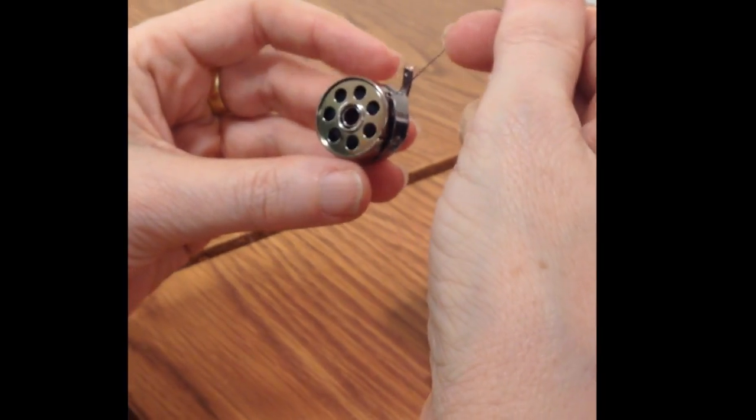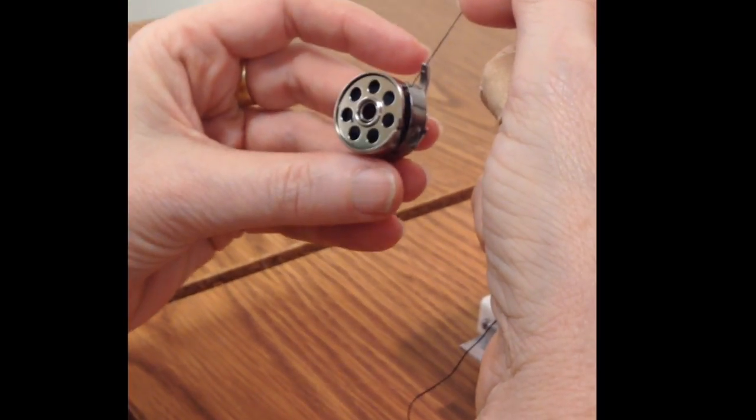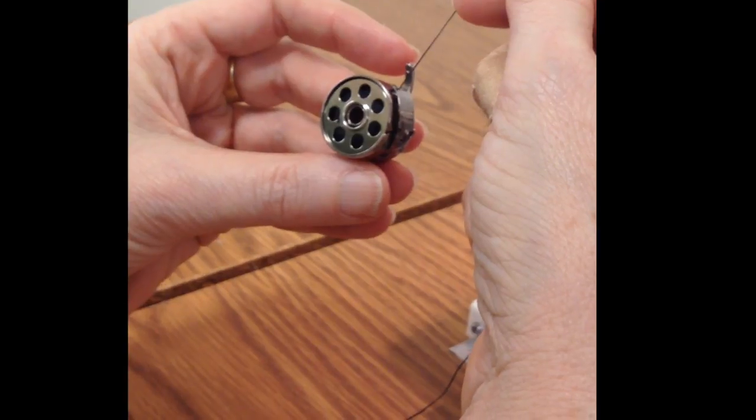How you can tell if the bobbin thread is too loose is if you hold onto the thread, let go of the casing and if it falls then that means this plate is too loose.